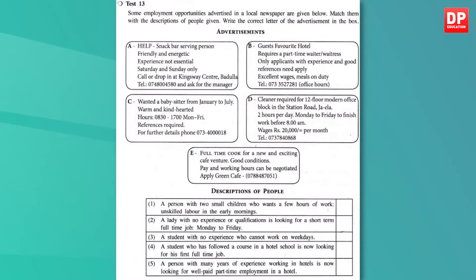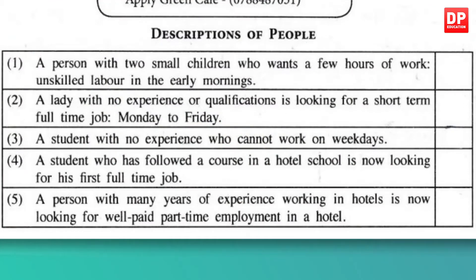Let's start off by looking at Test 13. Some employment opportunities are advertised in a local newspaper. Match them with the descriptions of people given — write the correct letter of the advertisement in the box. Before reading the text, it would help to quickly go through the descriptions of people so that you have an idea of what you are looking for. This will help you to skim and scan for the information easily. One: a person with two small children who wants a few hours of work, unskilled labor, in the early mornings.